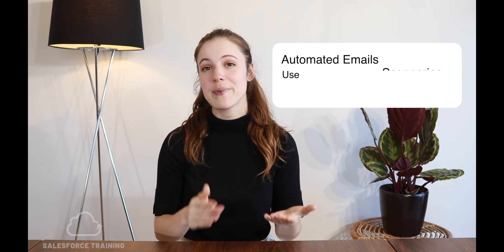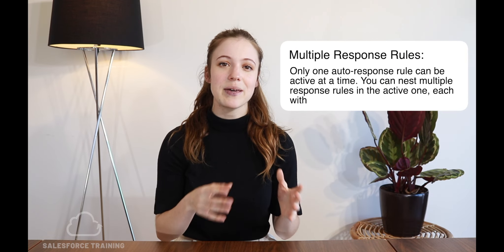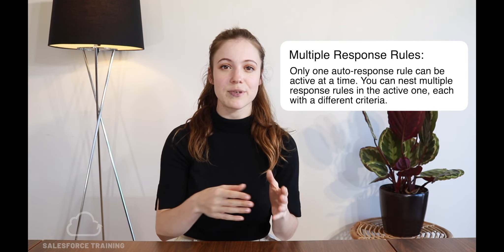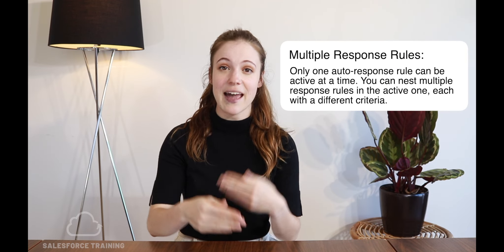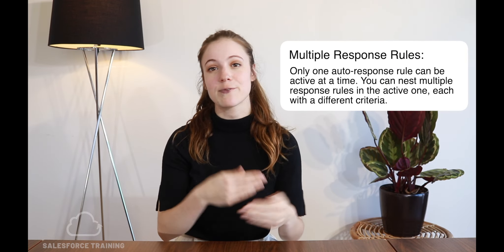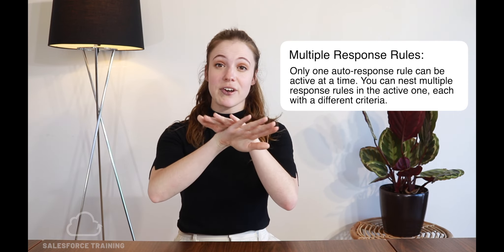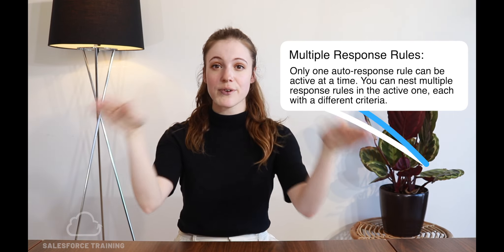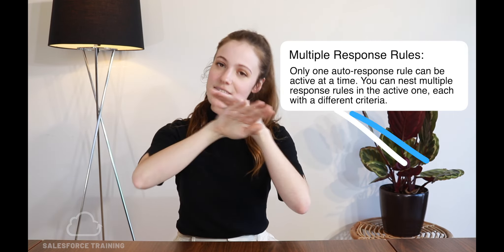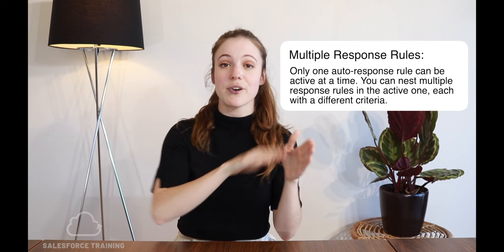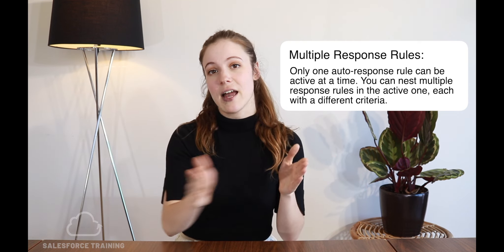Now there can only be one auto response rule active at a time, but there can be multiple response rules active within that, that have different criteria. So you're only going to have one overarching response rule, and then within that response rule you're going to have different criteria, and you can have a huge number of criteria there.